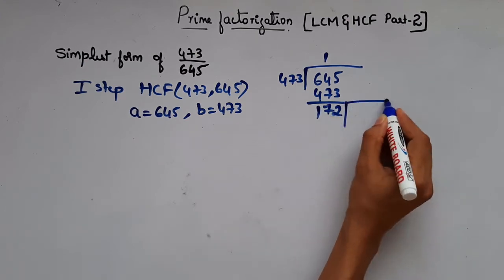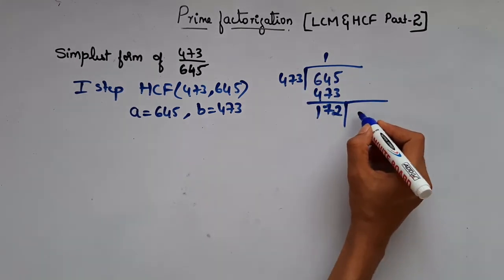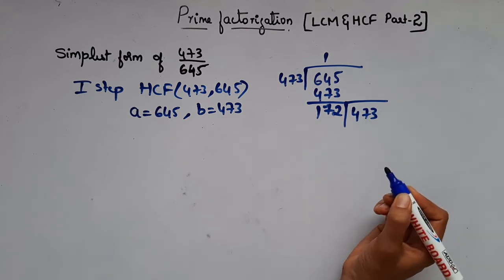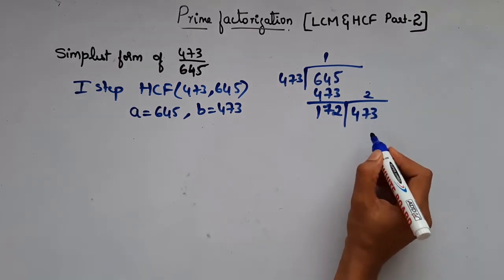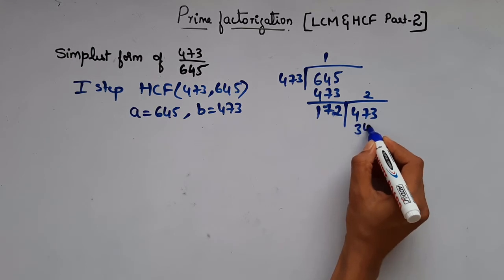Now this will be your divisor and b will be your dividend, that is 473. So 172 goes into 473 two times, 2 times 344.